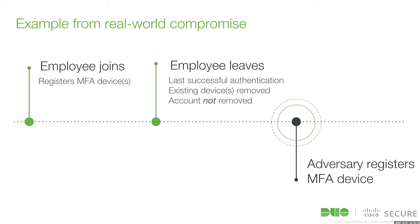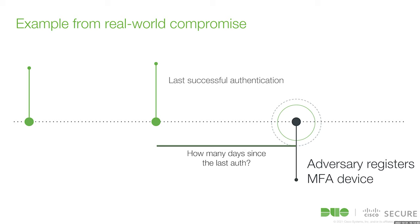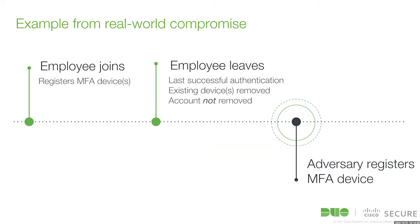I'll give an example from a recent compromise. One of our customers had an employee doing work, MFA was enabled, everything was fine. Then that employee left the company. During the deprovisioning process, their MFA devices were removed, but their account wasn't deactivated. So that account existed within their Active Directory until an adversary came along and said: I've cracked their first factor credentials, and this customer has not had any other identity proofing set up — so that's all I need to register an MFA device. The chain of trust is broken because strong identity proofing had been relaxed to provide a better user experience during onboarding, and this small security lapse led to the compromise.